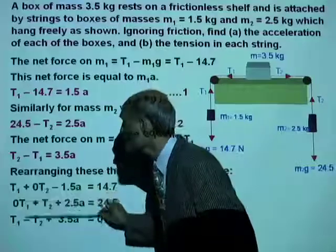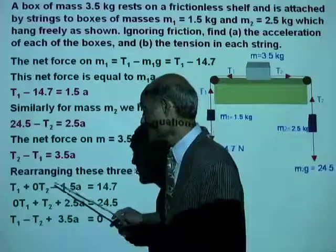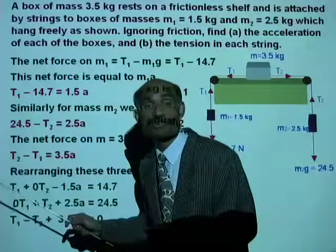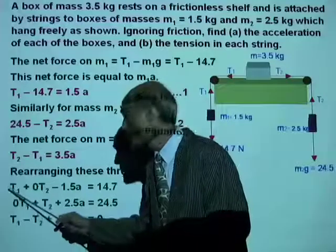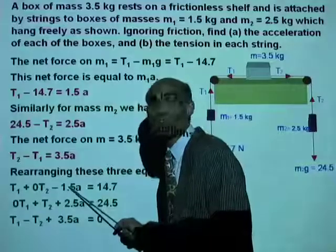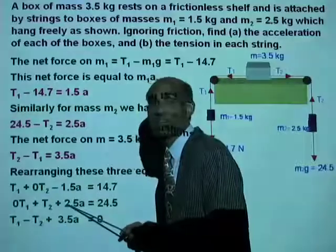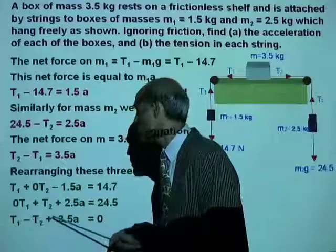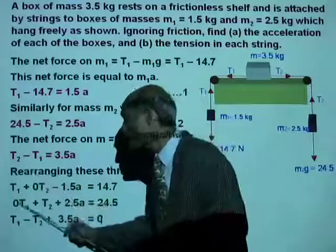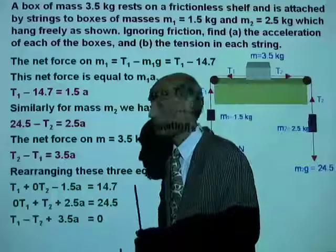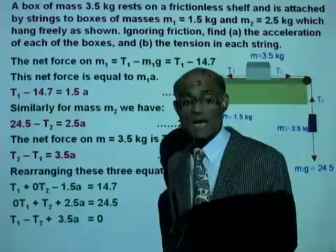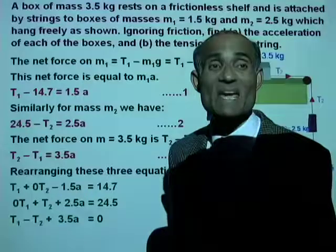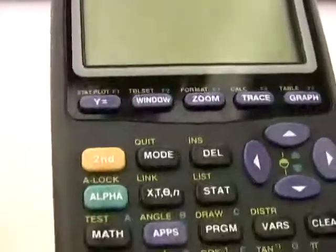How would you solve these three equations on your calculator? Make a matrix, which is a 3 by 3 matrix. Make a 3 by 3 matrix and enter the coefficients. What is that? 1, 0, negative 1.5, that's the first row. 0, 1, 2.5, that is the second row. 1, negative 1, 3.5, that is the third row. So you got your matrix A with those numbers, and your matrix B will be a 3 by 1 matrix. Make your matrix B and calculate A inverse multiplied by B. I'm going to show this one more time to you, how to make these matrices.